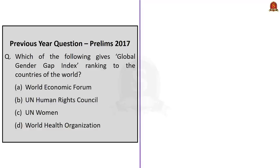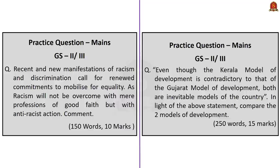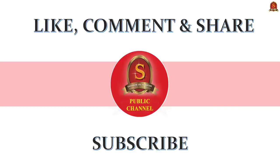The final question is based on the Global Gender Gap Index — asked in Prelims 2017. Which of the following gives the Global Gender Gap Index ranking to countries? Option A: World Economic Forum; Option B: UN Human Rights Council; Option C: UN Women; Option D: World Health Organization. The correct answer is Option A: World Economic Forum. With this, we come to the end of today's news analysis and practice questions session. If you like this video, don't forget to like, comment, and share, and subscribe to Shankar IAS Academy YouTube channel for more civil service examination preparation updates.